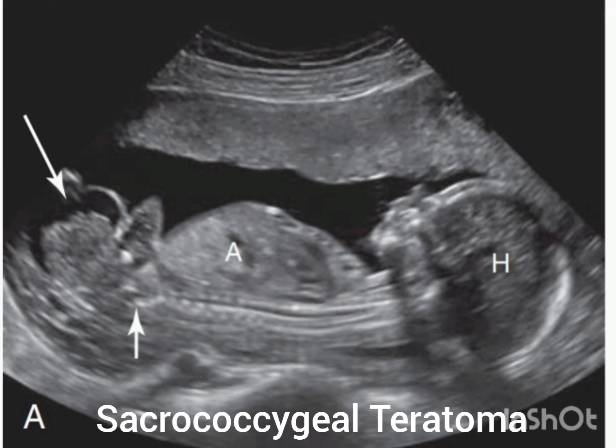Hello guys, today's video is about the ultrasound of sacrococcygeal teratoma, which is a review from the book Requisites of Ultrasound. A sacrococcygeal teratoma is a neoplasm that extends from the fetal rump, and it has all three germ cell layers.